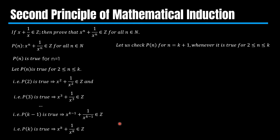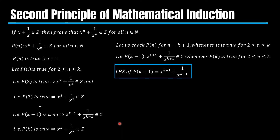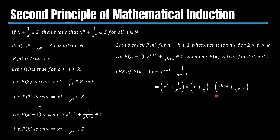Now we will check whether P(k+1) is true or false whenever P(2) through P(k) are true. The left-hand side of P(k+1) equals the sum of x^(k+1) and its reciprocal. This expression can be rewritten as x^k + 1/x^k times (x + 1/x) minus x^(k−1) + 1/x^(k−1). If you solve it you will get the above expression.